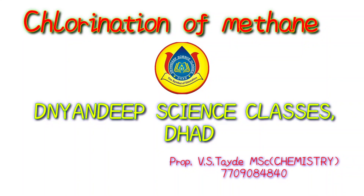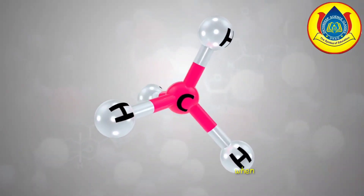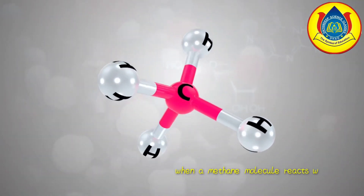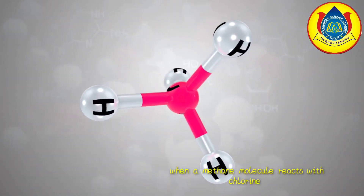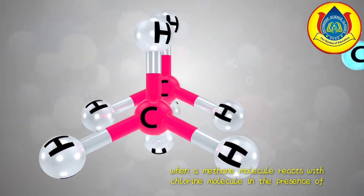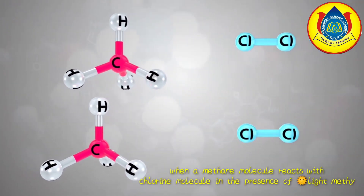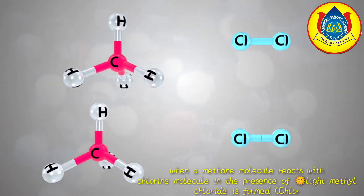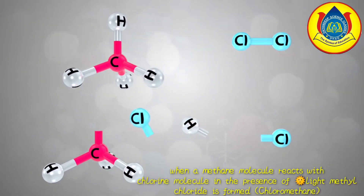Today we are going to discuss about chlorination reaction in short. In chlorination reaction, a methane molecule reacts with a chlorine molecule in presence of sunlight to form chloromethane.